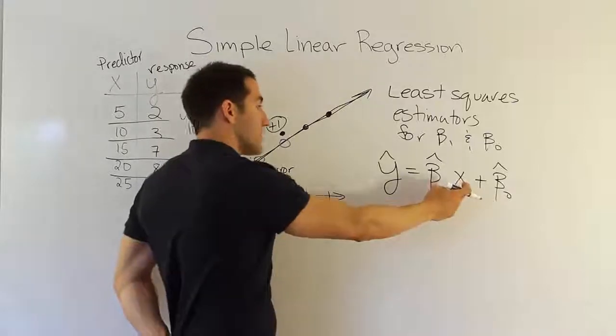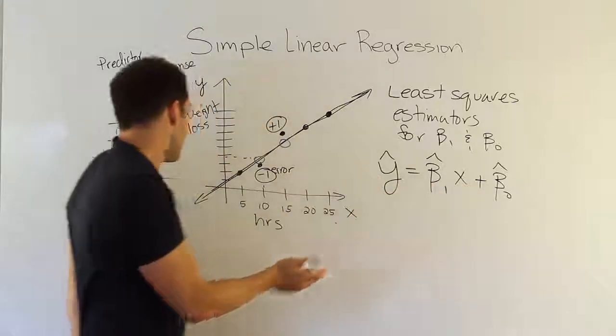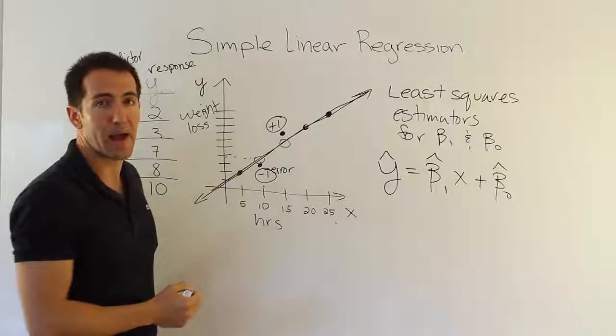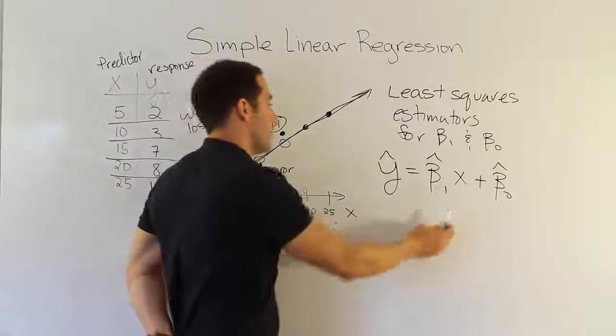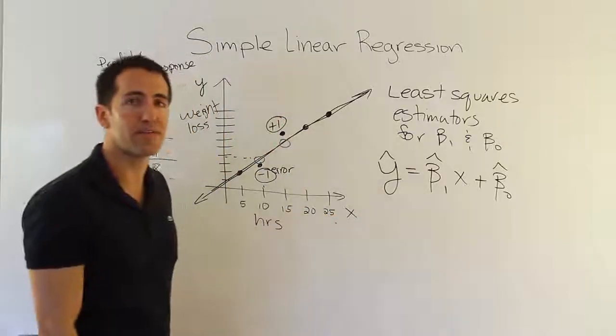So if you spent 10 hours in the gym, we're going to estimate, let's say, that the average weight loss is 4 pounds for 10 hours in the gym. The average weight loss for somebody who does that is 4. Okay. Alright, and that's it. That's basically the idea behind it.